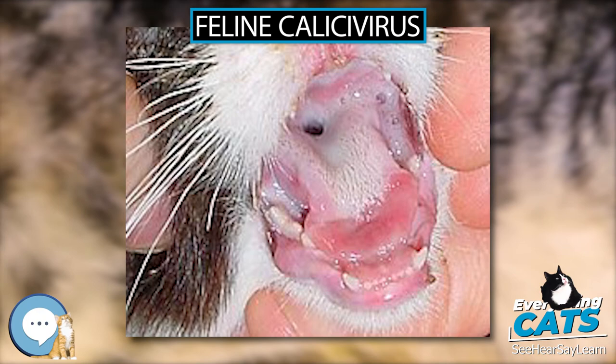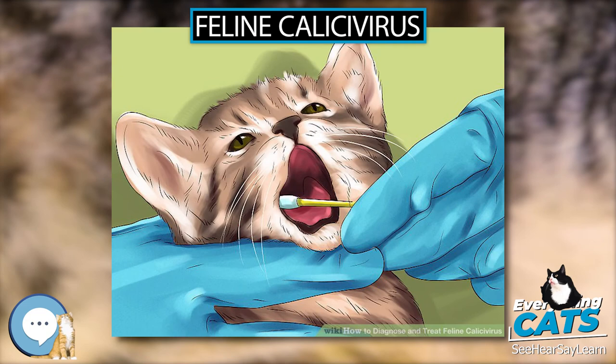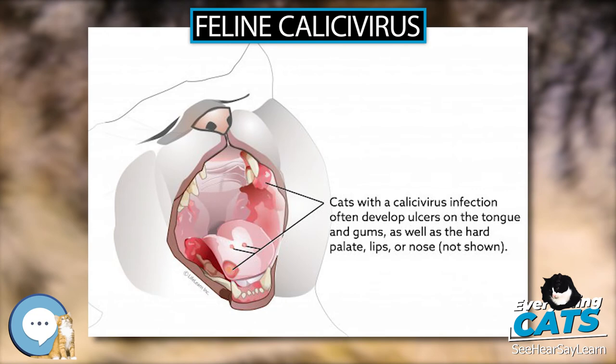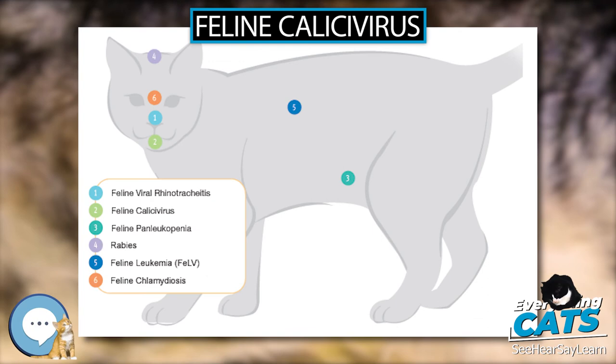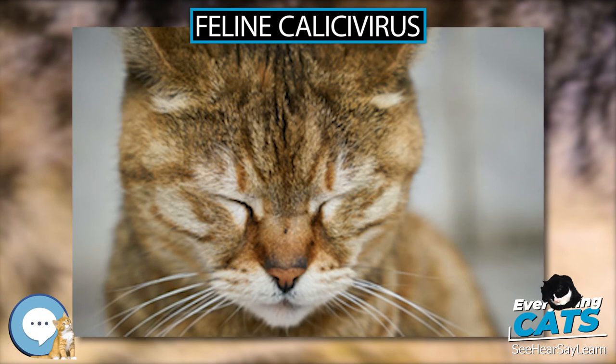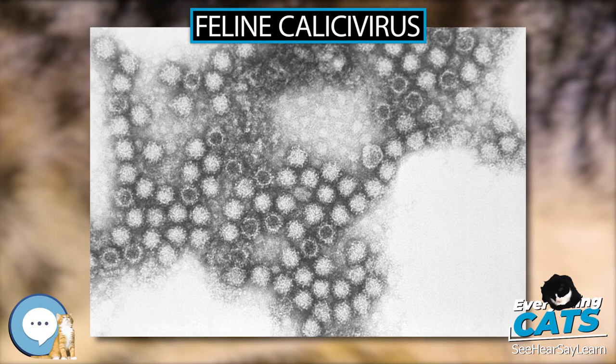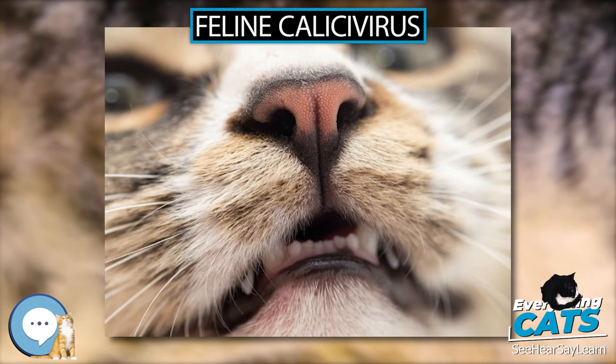FCV vaccines come in two types: inactivated and attenuated (live, but not virulent), in various combination vaccines. They have been shown to be effective for at least 3 years. The attenuated FCV vaccine has been shown to possibly cause mild upper respiratory infection. Inactivated vaccine does not, but it causes more local inflammation and possibly predisposes the cat to vaccine-associated sarcoma.